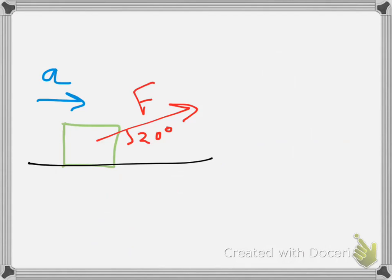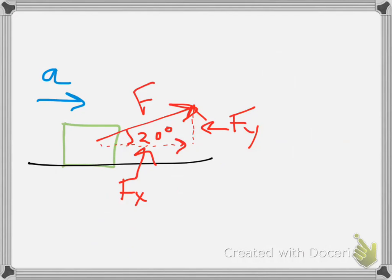Our force is not all in the horizontal direction — some of it's going up, and some of it's going forward. So we have to break that force apart into the x part, Fx, and the y part, Fy. The acceleration is going to the right, so we want the force that's pulling it to the right. Fx is the thing that actually contributes to our acceleration, so a equals Fx divided by m, not just f divided by m — only the portion of force actually contributing to motion.